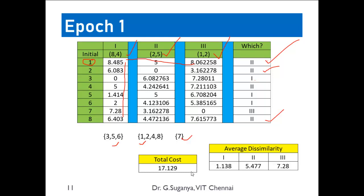The total cost is calculated by summing all the dissimilarity values used when assigning each instance to its cluster. This total dissimilarity value is the deciding parameter for evaluating the quality of the current clustering configuration.